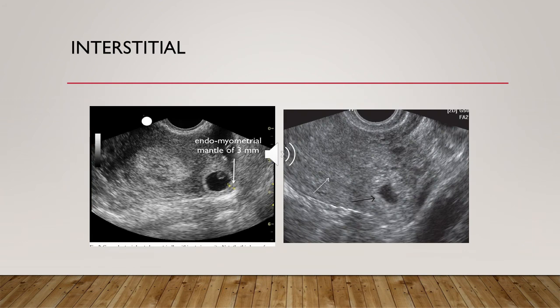Interstitial pregnancy accounts for about 1 to 6.3 percent. It is diagnosed by ultrasound showing an empty uterine sac, with the product of conception and gestational sac located laterally in the interstitial intramural part of the tube, surrounded by less than 5 mm of myometrium in all imaging planes as shown in the slide, with the presence of the interstitial line sign. Serum beta-hCG should be measured at diagnosis, and sometimes a repeat is needed. Non-surgical management is recommended for stable interstitial pregnancy. Expectant management is only suitable for women with low or significantly falling beta-hCG levels in whom addition of methotrexate may not improve the outcome.